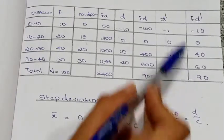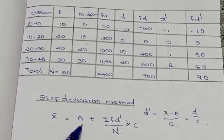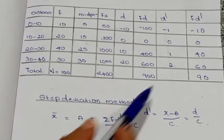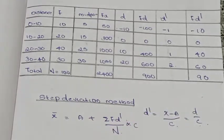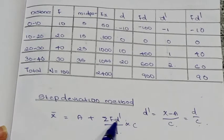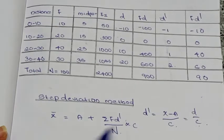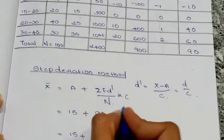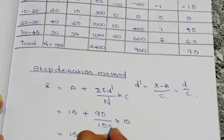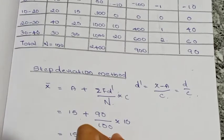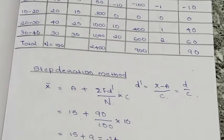The sigma fd' total is 90. We assume A equals 15. With n equals 100 and c equals 10, the mean equals A plus sigma fd' divided by n, multiplied by c: 15 plus 90 divided by 100 multiplied by 10 equals 15 plus 9 equals 24. The mean is 24.